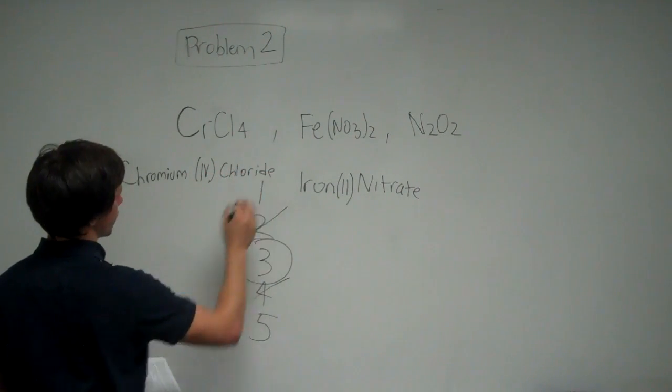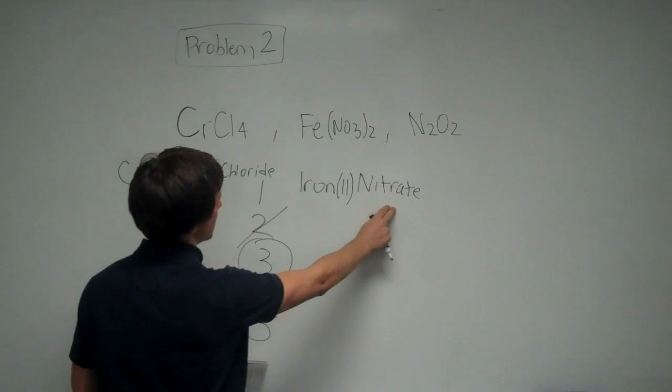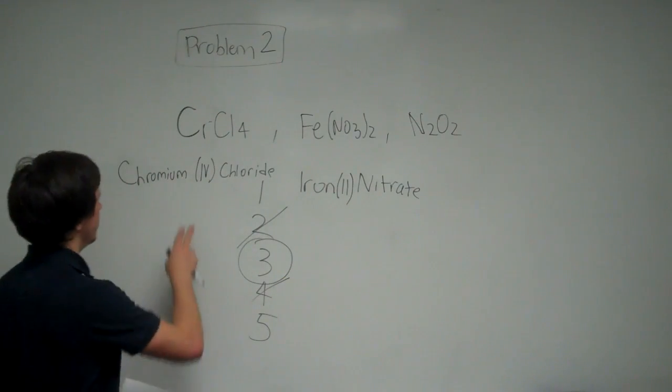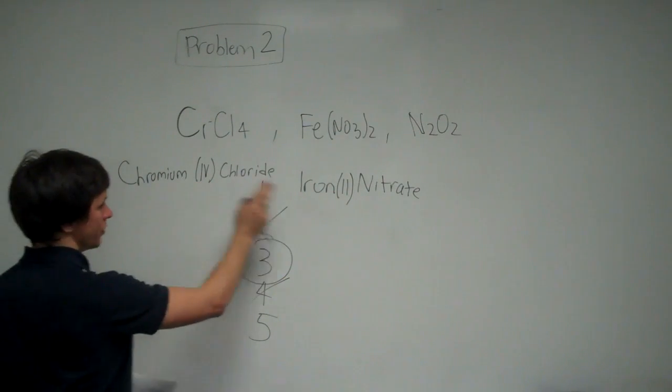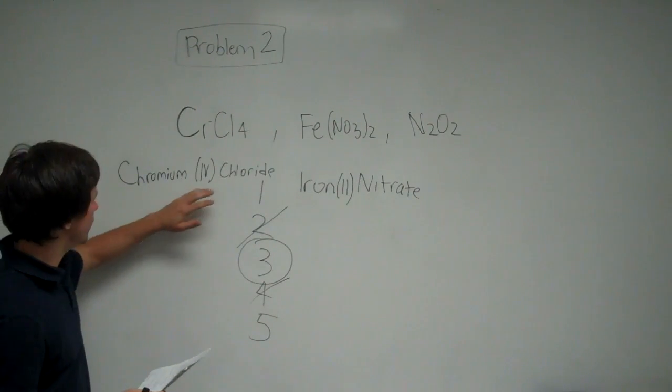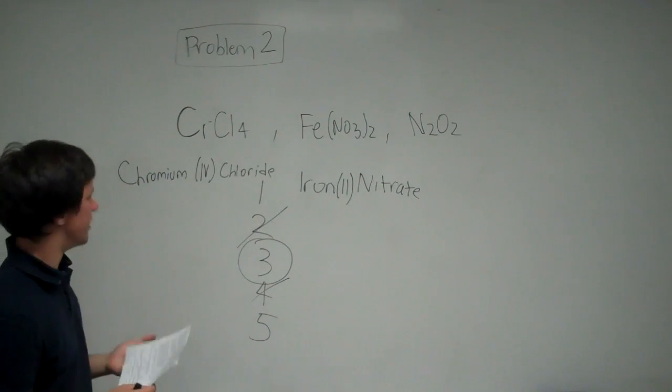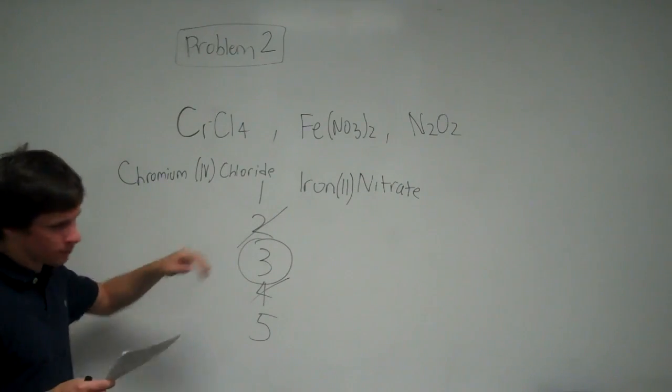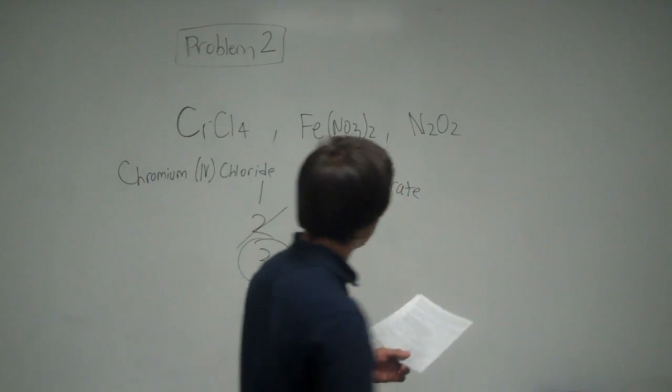You don't have to say tetrachloride, just like you don't have to say dinitrate, because it's made apparent by the Roman numeral that accompanies the name of the transition metal. So chromium (IV) chloride, and you can see that that's what it says in answer choice 3.